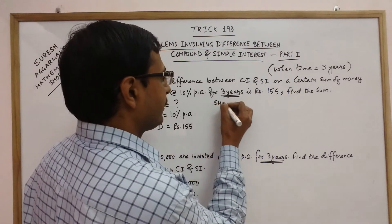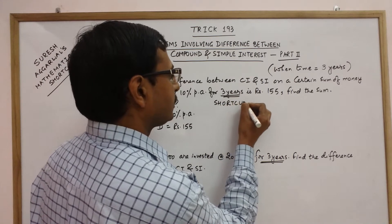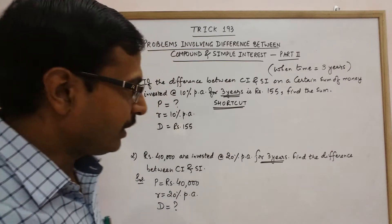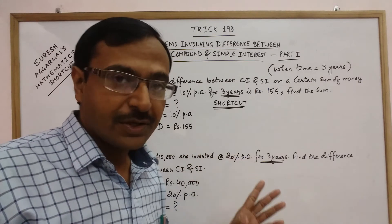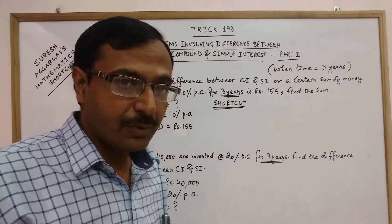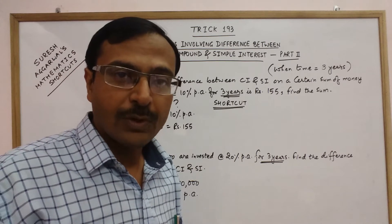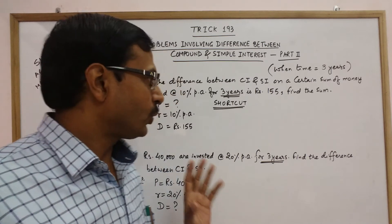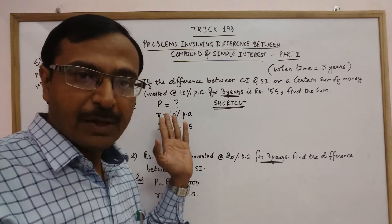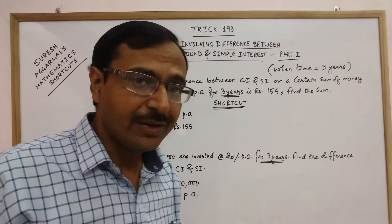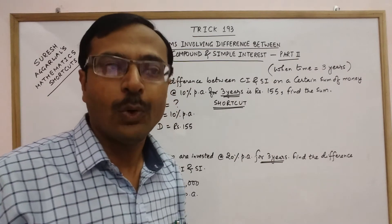So the shortcut for this is a very good and amazing shortcut, because the traditional method will consume a lot of time. You have to find compound interest, you have to find simple interest, apply long formulas and then solve it to get the required principal amount. By using this shortcut you will be able to do it in 3 to 4 seconds time only.